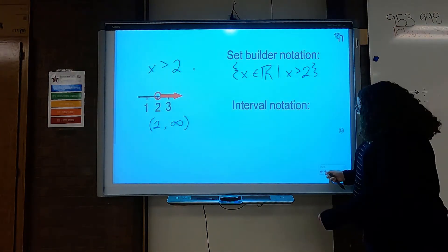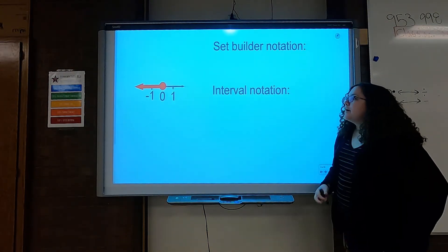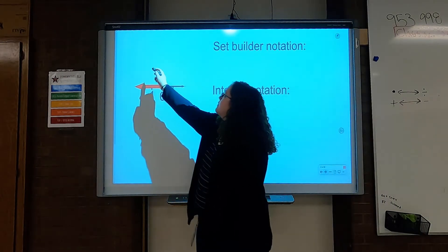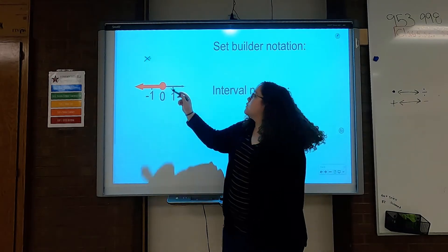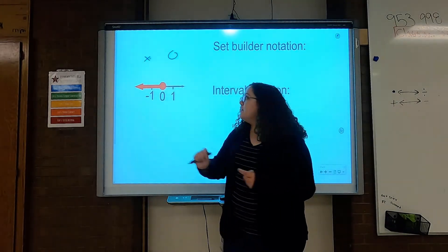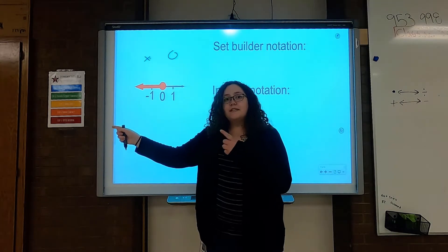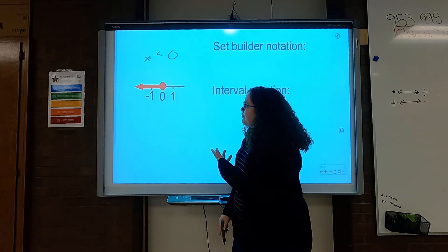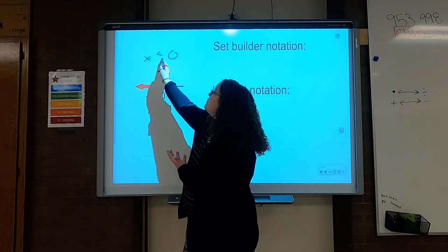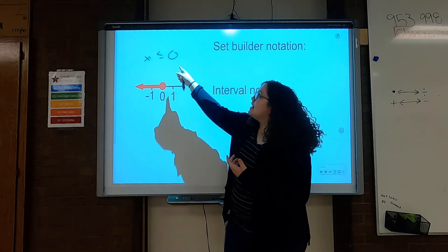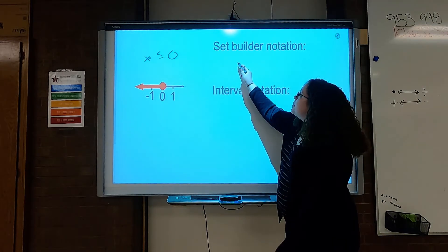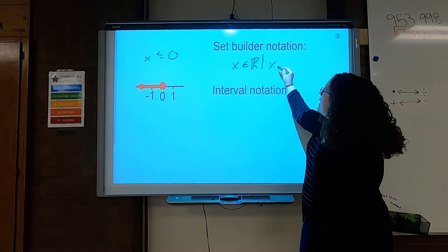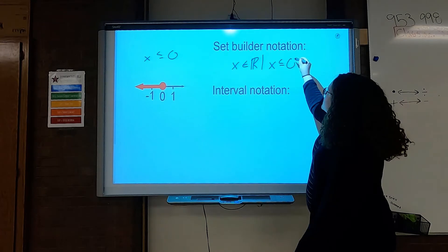Alright, let's try one more example like this. Now we've got set builder notation again. So let's write x — we've got a 0 as our focus here. It looks like this arrow is going forever in the left direction, so we've got left is less — a little mouse looking at the x. And is this circle filled in? Well, this time it is, which means we have to include it. x is less than or equal to 0. And that's super easy to throw into set builder notation: x is an element of the reals such that x is less than or equal to 0.